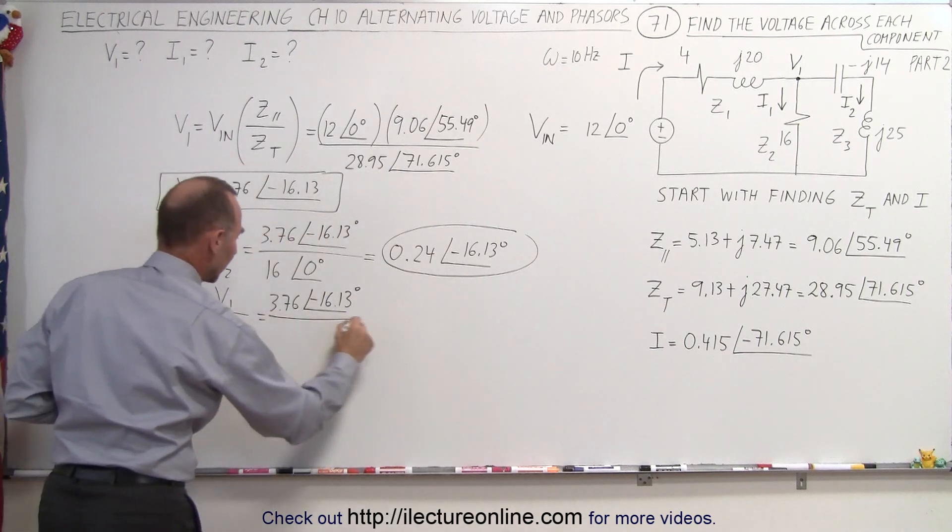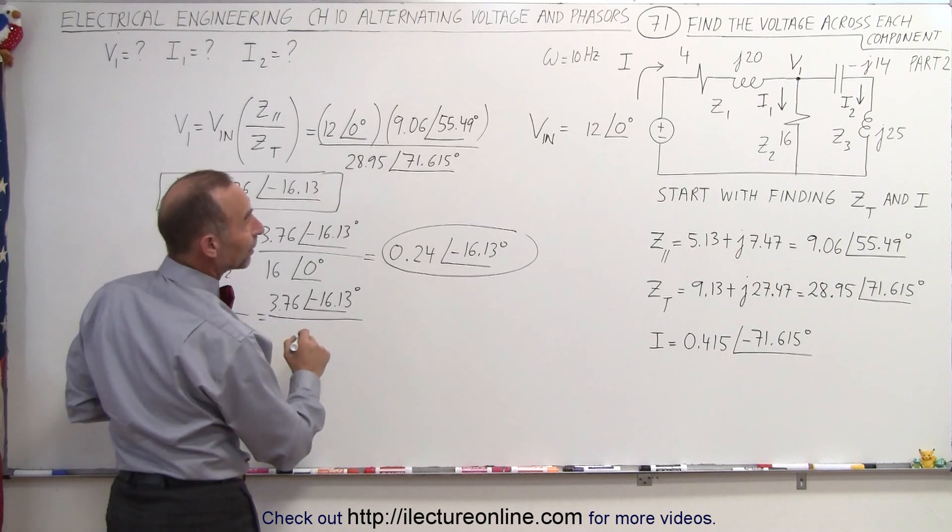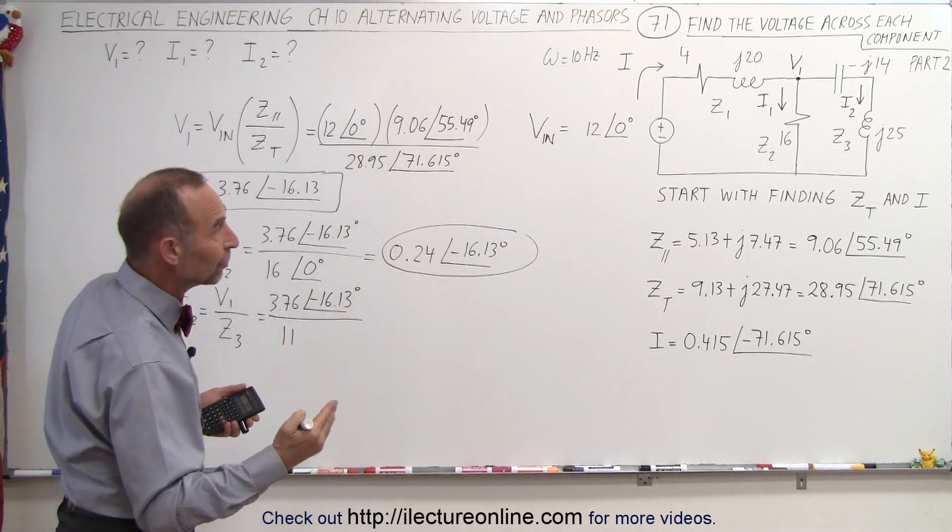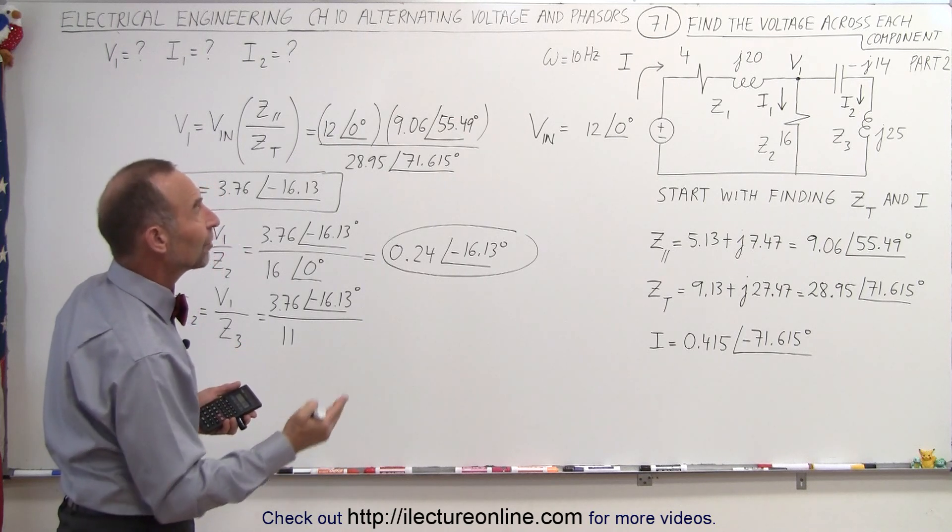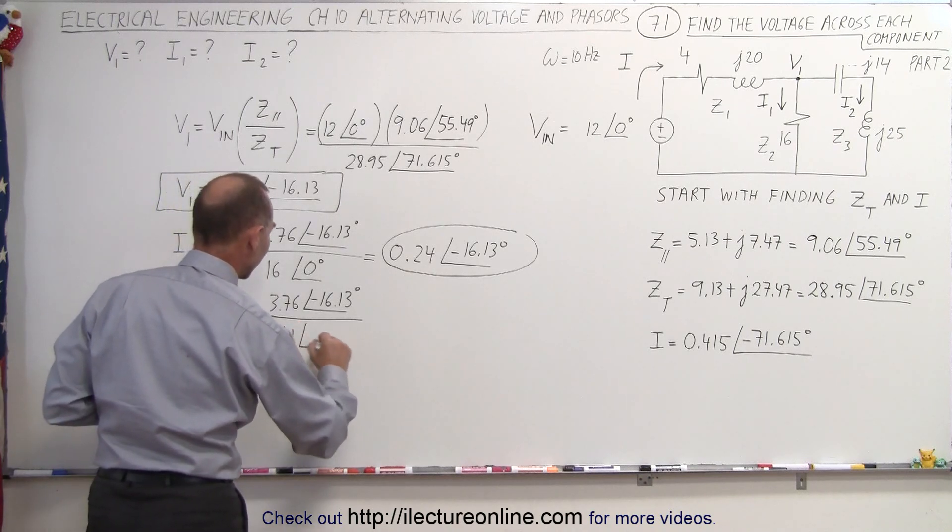divided by Z3. That would be a magnitude of 11. And since the inductor has a larger reactance than the capacitor, it wins out. And so we have 11 with a phase angle of plus 90 degrees.